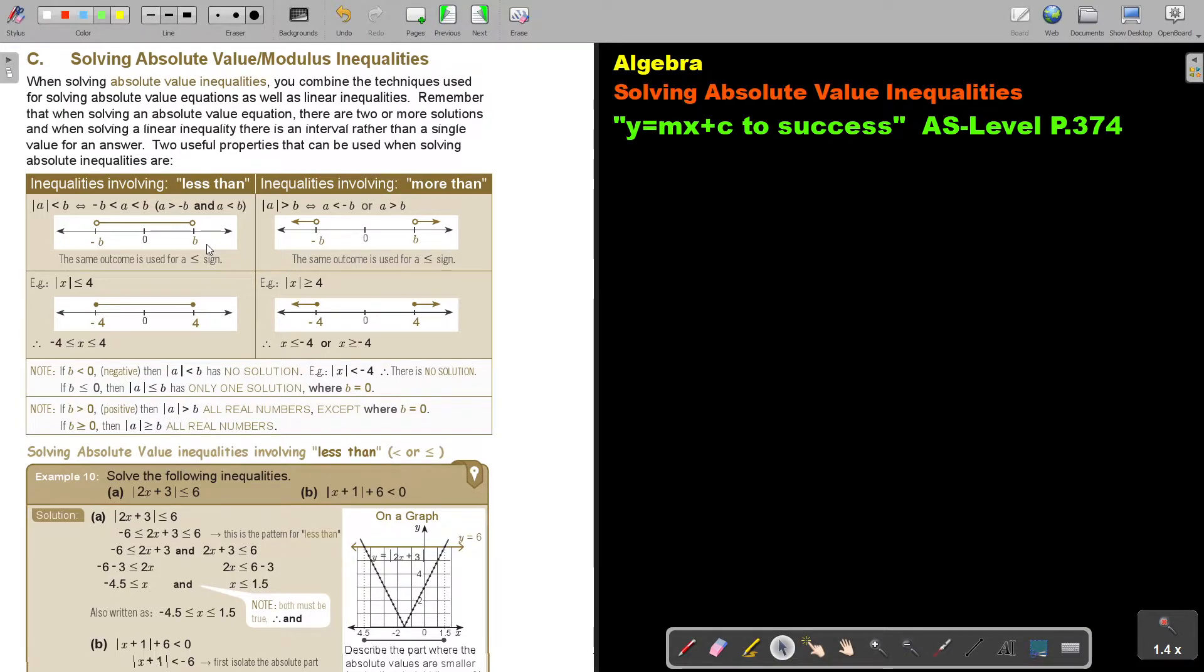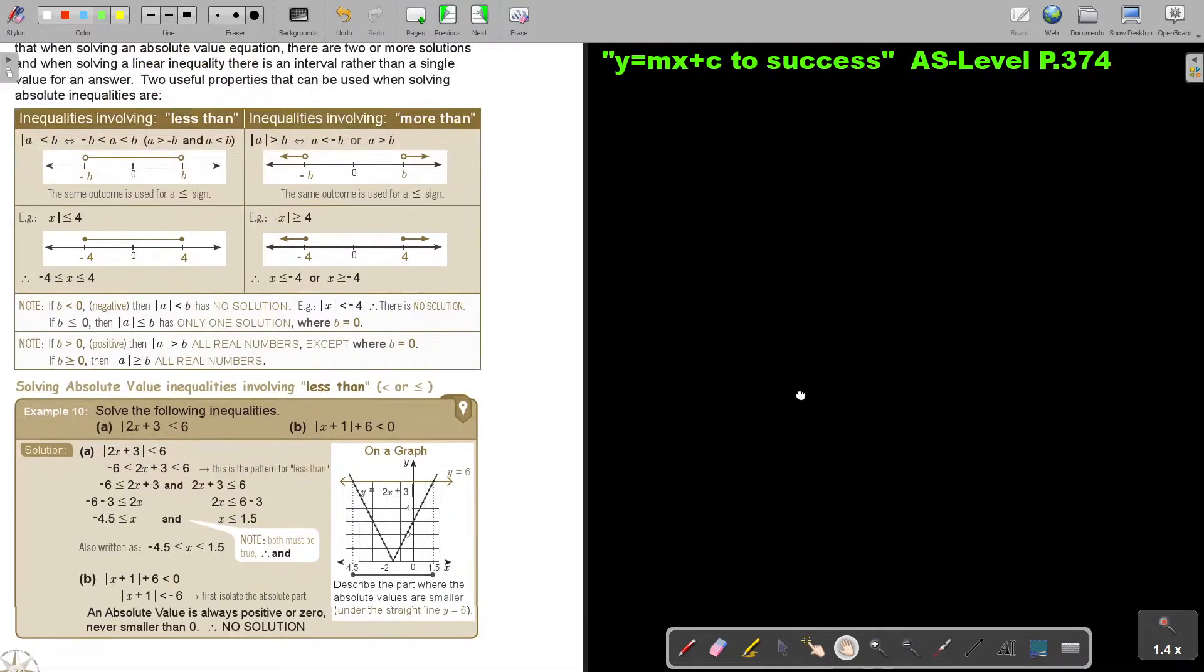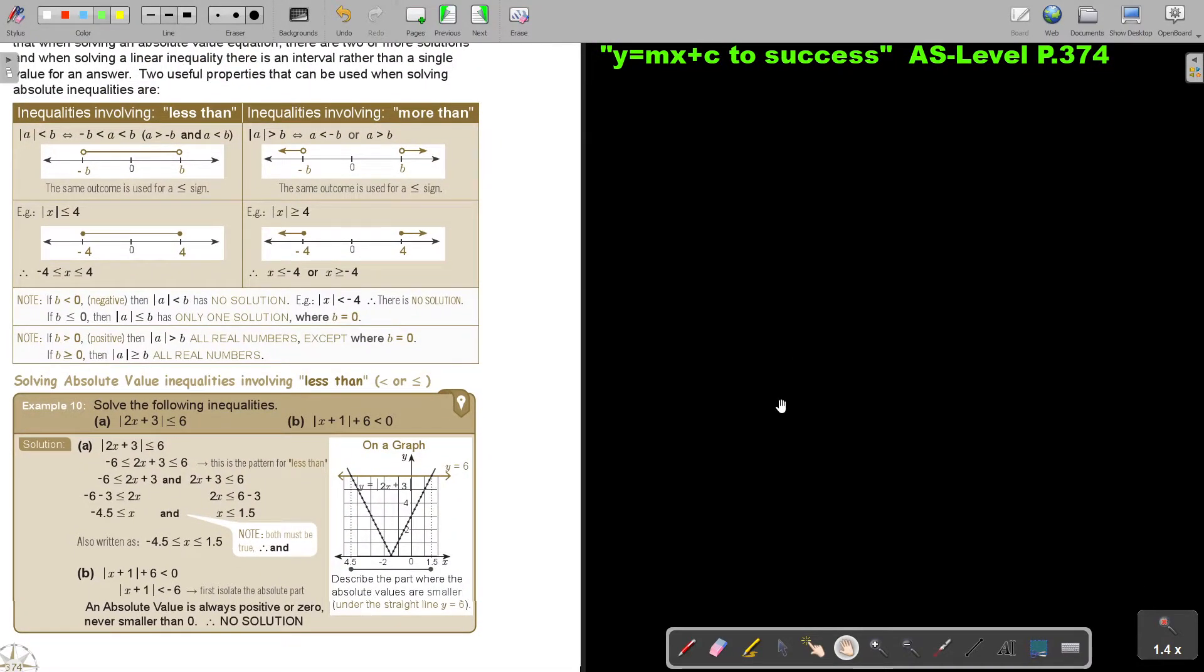But the best is always to look at an example. In this case, we will start, in this video, just look at less than. And please have that picture in your mind. So solve absolute value inequalities involving less than. So solve the following inequalities. So this is smaller, is less and equal to 6. Don't forget, think of your number line. I don't have a number line now, but it's all right. I will just quickly draw one.